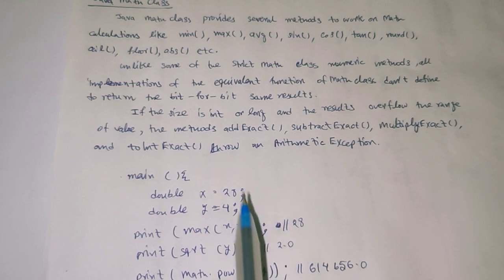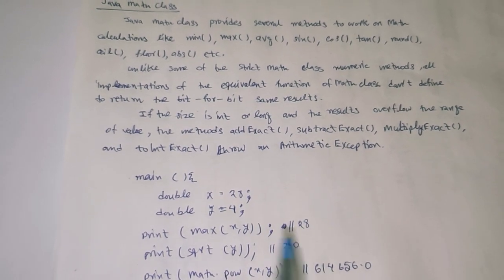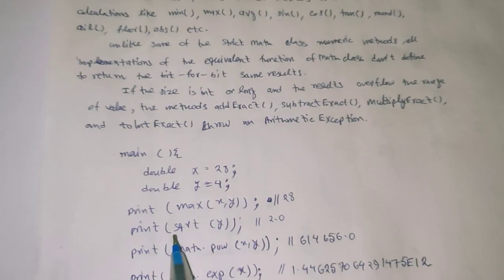Print max of x comma y means maximum of two variables. Whichever is maximum returns the value, so 28 will be returned.